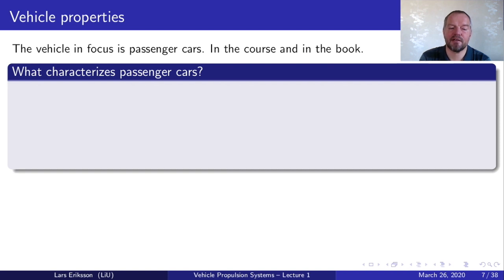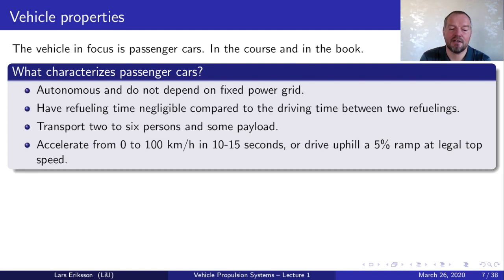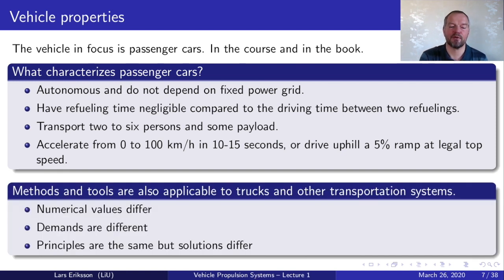The vehicle in focus in this course is passenger cars, also the focus of the course book. Passenger cars are autonomous and don't depend on a fixed power grid. They have refueling time negligible compared to driving time. They can transport two to six persons and some payload, accelerate from zero to 100 km/h in 10 to 15 seconds, or drive uphill a 5% ramp at legal top speed. The methods and tools are also applicable to trucks and other transportation systems like railways, though numerical values differ.